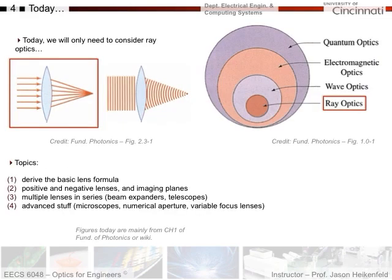So today, to do the lenses and other applications of lenses, we only need to consider ray optics. So we'll keep things fairly simple, but you'll see mathematically it can be a little bit intense as well. We're going to derive the basic lens formula. We're going to look at positive and negative lenses and imaging planes. We're then going to combine lenses to make beam expanders and telescopes. And then we're going to look at some advanced stuff, such as microscopes, numerical aperture, variable focus lenses.